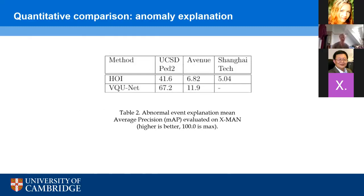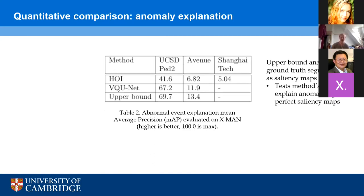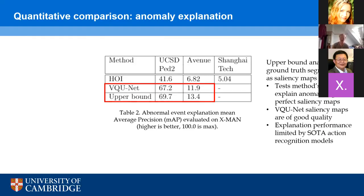To get a gauge of how good the scores are, we can perform upper bound analysis by taking the ground truth anomaly segmentations instead of the saliency map from VQ-UNET. This will test the method's ability to explain anomalies if it was given perfect saliency maps. The scores from my method and from the upper bound are pretty close, which leads to two conclusions: first, that VQ-UNET saliency maps are of good quality because the explanation scores are almost as good as if you had perfect saliency maps; and second, that explanation performance is currently limited by the state-of-the-art action recognition and object detection models available in literature.